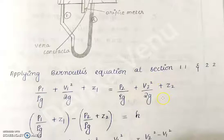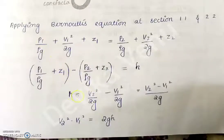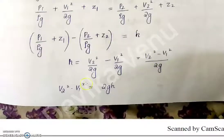From the previous example of the venturi meter, the head difference h is defined as (p1/ρg + z1) − (p2/ρg + z2). Substituting this into the Bernoulli equation gives: h = (v2² − v1²) / 2g, which rearranges to v2² − v1² = 2gh.